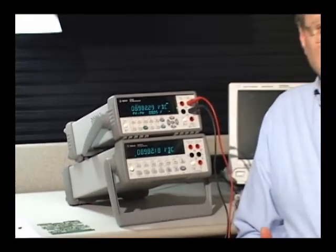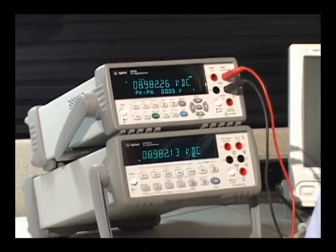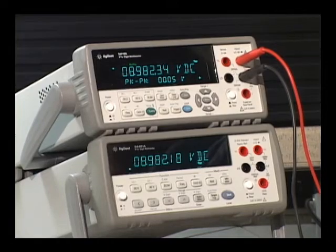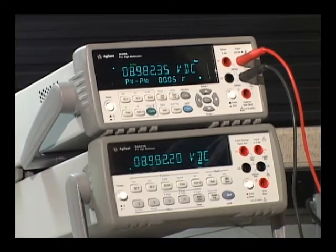Let's go ahead and compare the 34410A to the 34401. One of the first things you'll notice is the dual display. This allows you to take simultaneous measurements like I'm showing here with DC voltage with an AC ripple riding on top of it and being able to measure both of those at the same time.